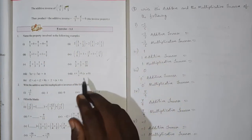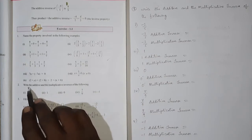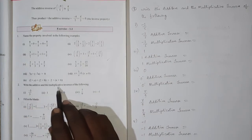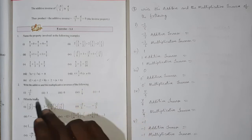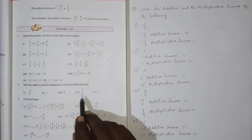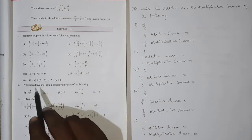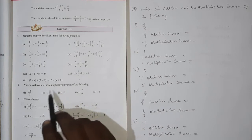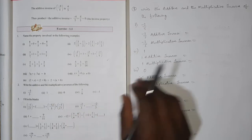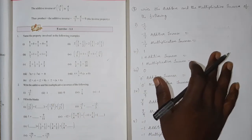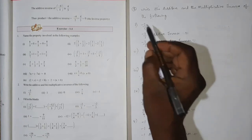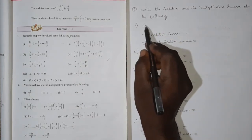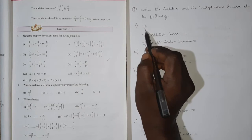The problem is: write the additive and multiplicative inverse of the following. The first problem is minus 3 by 5.